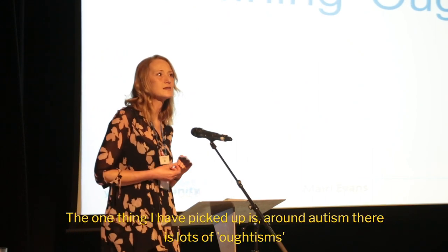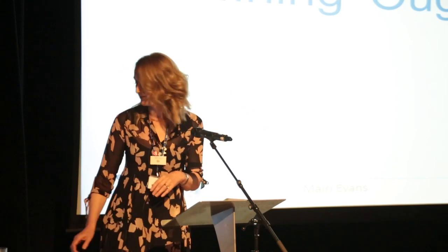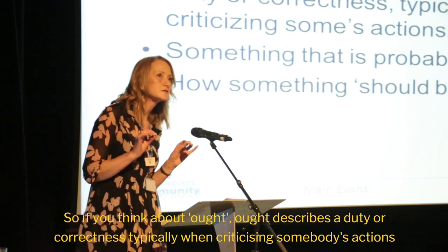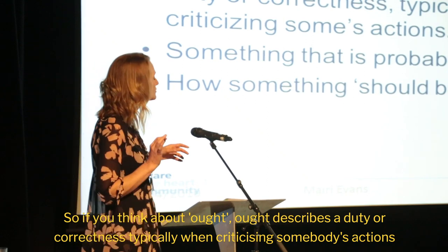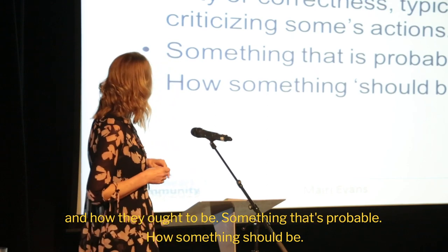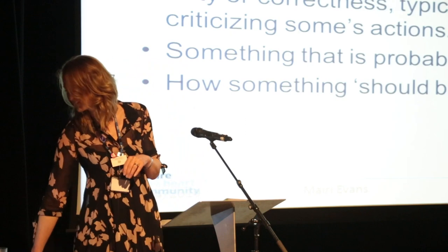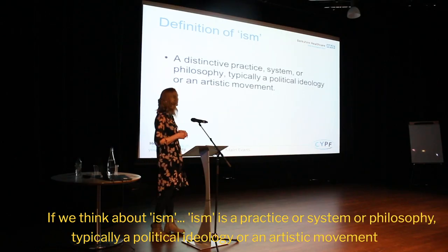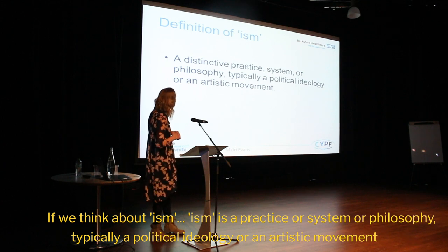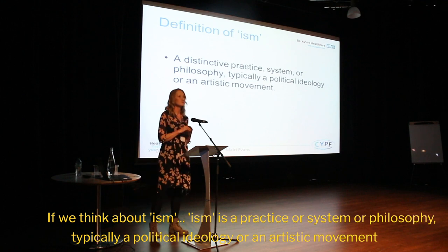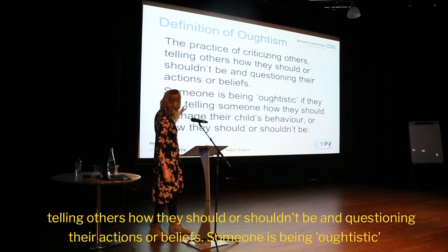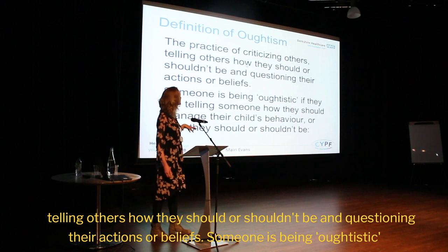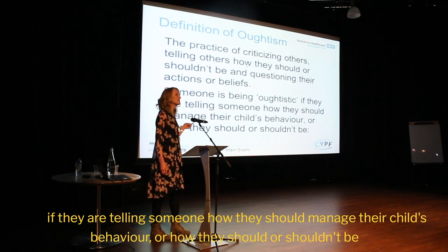One thing I have picked up is that there are lots of Autisms. If you think about 'ought' — it describes a duty or a correctness, typically when criticising somebody's actions, something that's probable, how something should be. And 'ism' is a practice or system or philosophy, typically a political ideology or an artistic movement. When we put those together, we get Oughtism — the practice of criticising others, telling others how they should or shouldn't be, and questioning their actions or beliefs. Someone is being Oughtistic if they are telling someone how they should manage their child's behaviour.